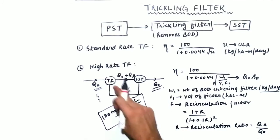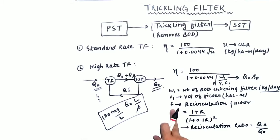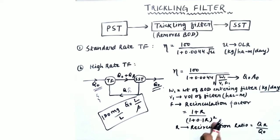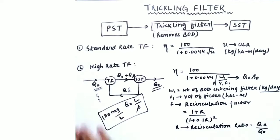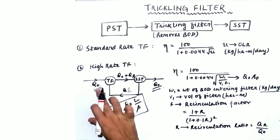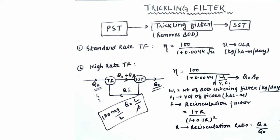V1 is the volume of the trickling filter. F is called the recirculation factor, calculated as F = (1 + R) / (1 + 0.1R)², where R is the recirculation ratio. The recirculation ratio R is the ratio of the recirculated discharge QR to the incoming discharge Q0.